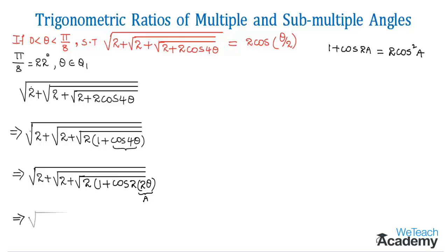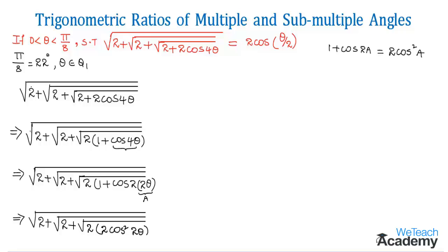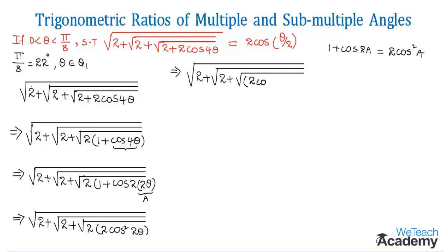By substituting, we get √(2 + √(2 + √(2·2cos²2θ))). We can write 2·2cos²2θ as (2cos2θ)², so the square and square root cancel, giving us √(2 + √(2 + 2cos2θ)).